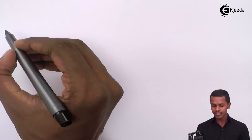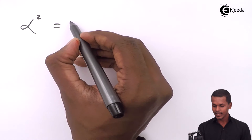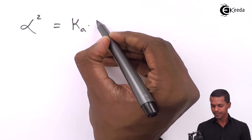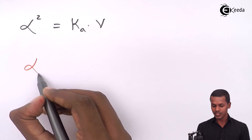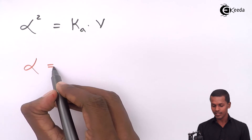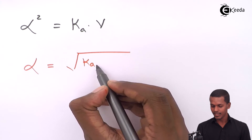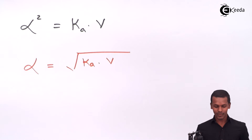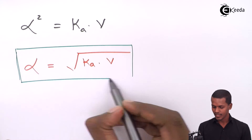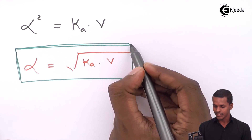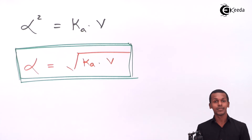We can write the degree of dissociation as alpha² = Ka × V, and therefore the degree of dissociation alpha equals the square root of Ka times V. This is the expression we have derived for the relationship between the degree of dissociation and the equilibrium constant Ka.